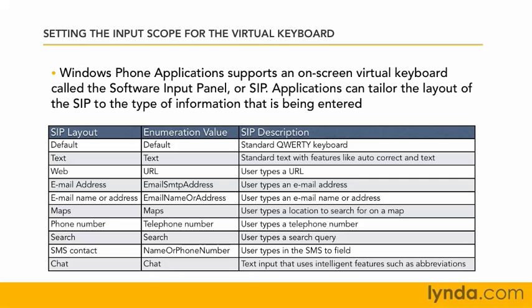There are about 10 or so of these different types of layouts — these are the 10 most common. When you're using these different kinds of layouts, it can really make entering text a lot easier for the users of your application. A great example is when someone's typing in a phone number. If you know they're going to be typing a phone number, you can set the input scope of a text box to telephone number, and rather than getting a giant keyboard most of which they can't use, they'll get a telephone number pad.